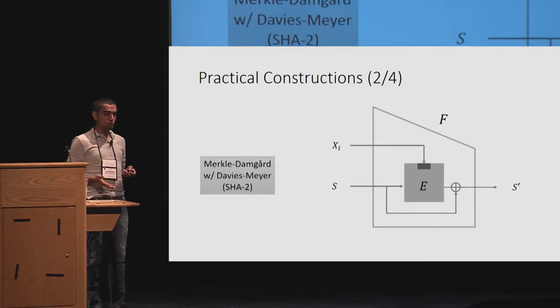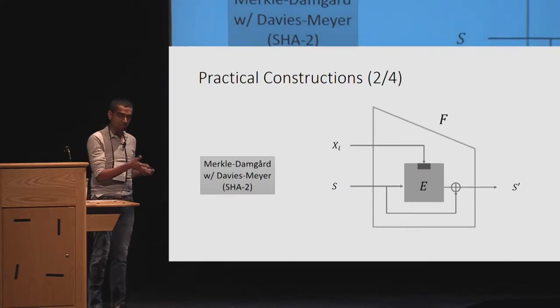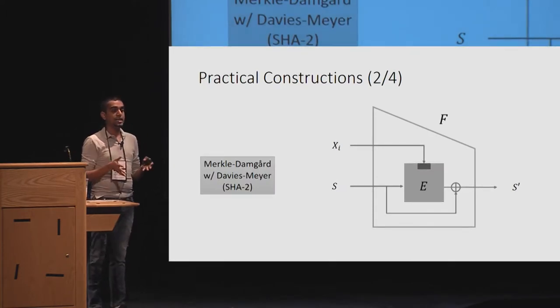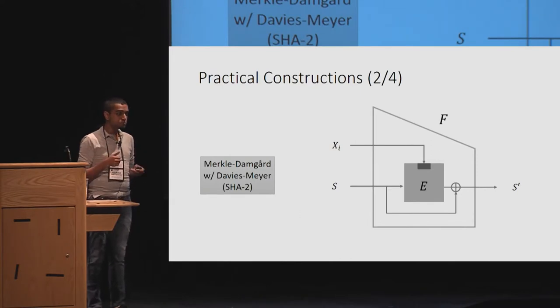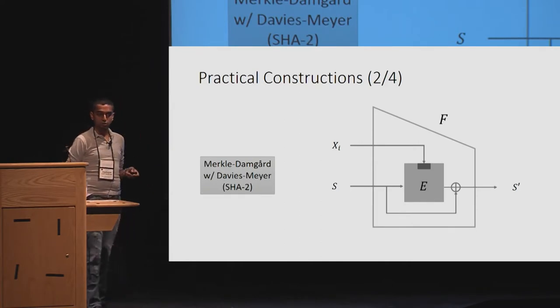The second construction we have is to instantiate the random compressing function, but with an ideal cipher instead. This is the basis by an ideal cipher. This is the Davis-Meyer-style construction that is used in SHA-2. Remember that we were discussing SHA-2, SHA-3, and looking at using them. The refresh function is as follows. Finalize outputs the same state.